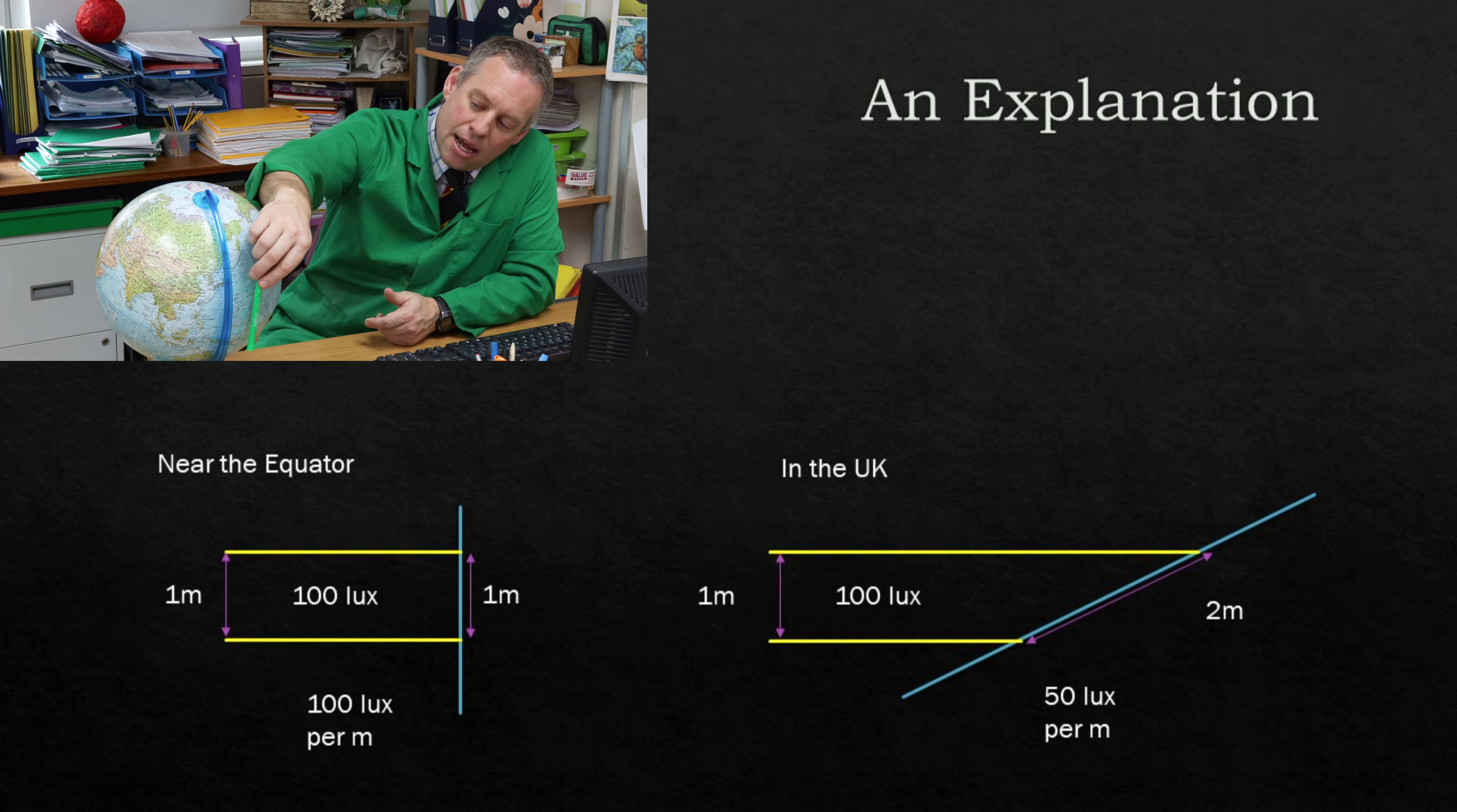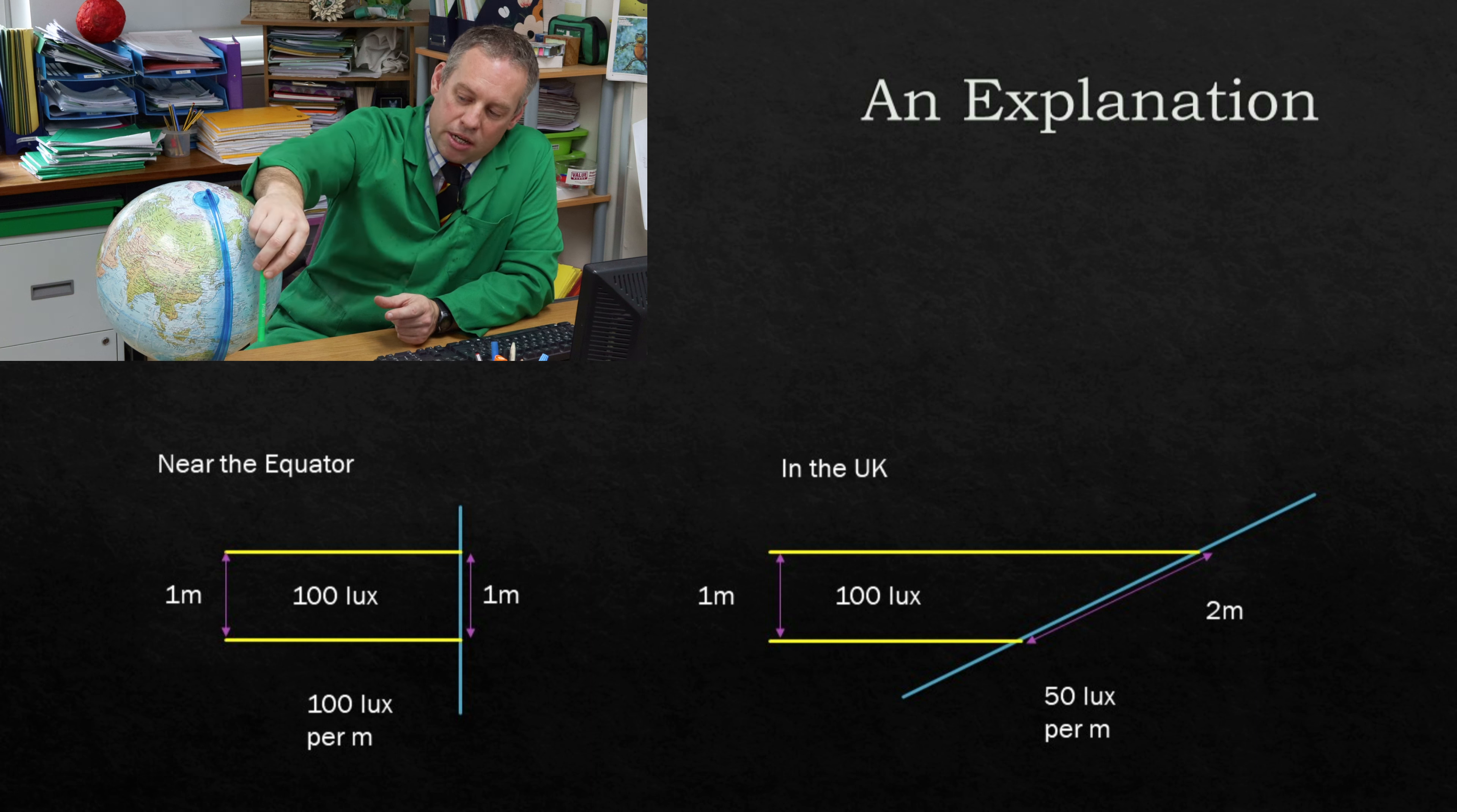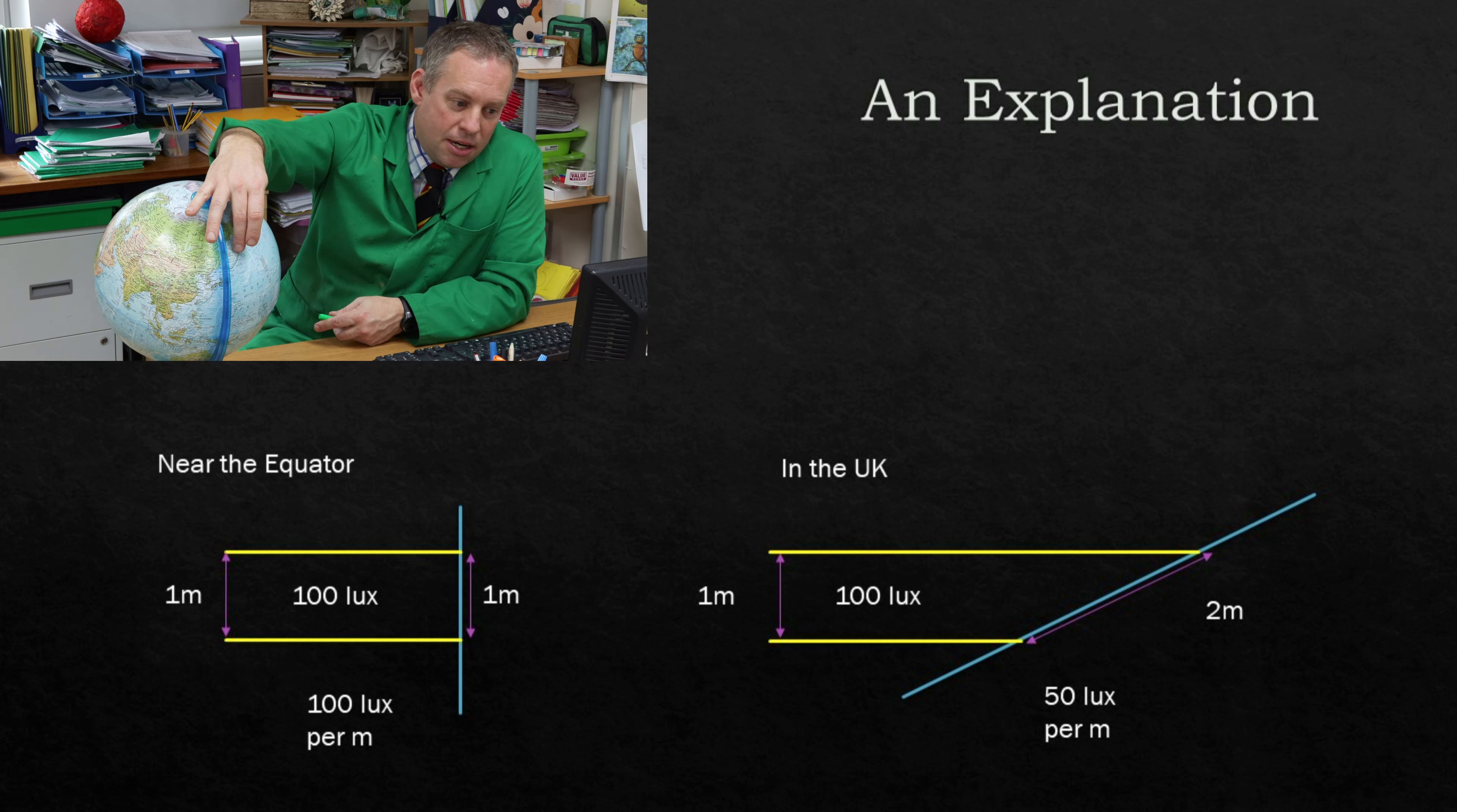Whereas if I put this angle here you can see the yellow lines are now extended. And so that same amount of sunlight, instead of being concentrated over one meter, is now concentrated over two meters. So where here you're receiving 100 lux for every meter you had on the surface of the Earth, here you're only receiving 50 lux for each meter. So that will be colder than here. The sunlight is concentrated there, it is more spread out here.